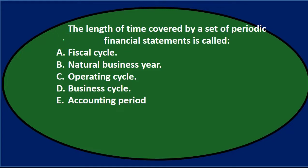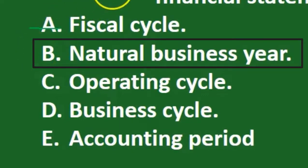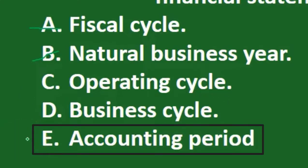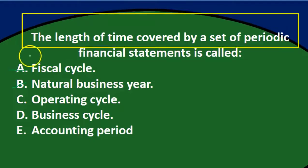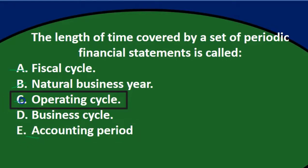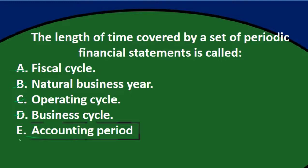We're looking for the length of time covered by a set of periodic financial statements. The question doesn't specify a year, so fiscal cycle and natural business year may not apply. That leaves operating cycle, business cycle, and accounting period. The operating cycle gives us our cycle of operations, and the business cycle describes our business rotations. But the best answer here would be E, accounting period, as the length of time covered by a set of periodic financial statements.